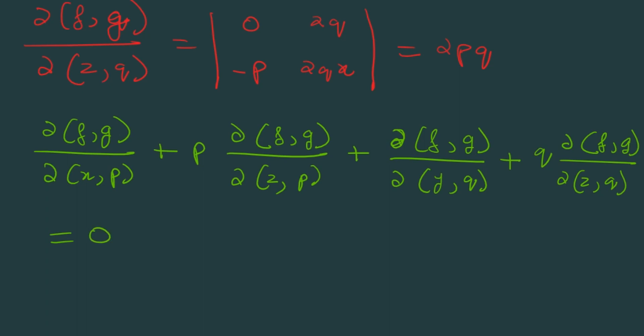Now when you put the values you're going to get -2pq - 2pq² + 2pq + 2pq² = 0. So 0 = 0.